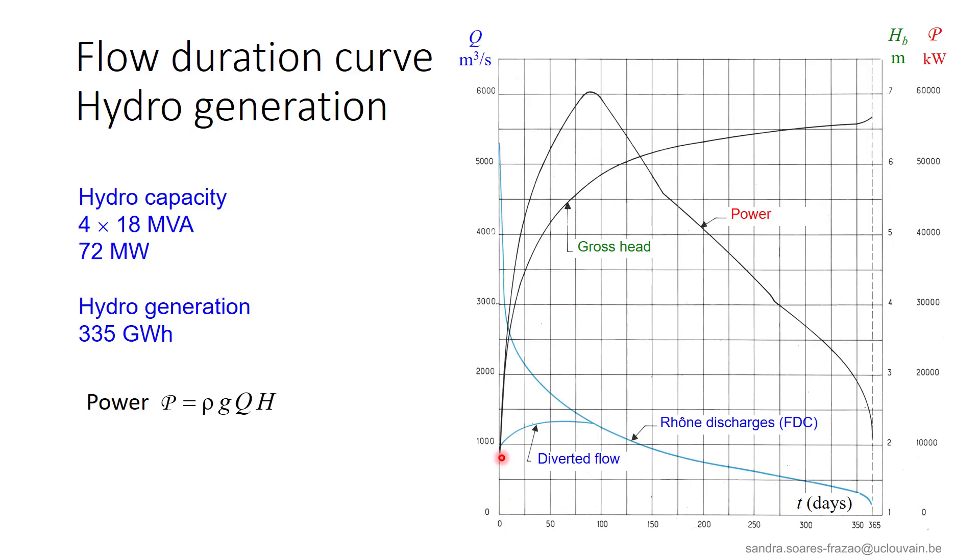The gross head, so this curve here, is the difference in water level between the upstream and downstream reaches. And it is represented here for each discharge of the flow duration curve. We see that the head is more important in low flow conditions here than in flood periods here, which is logical, as during floods, the gates of the dam are open to evacuate this discharge, which reduces the difference in water level.